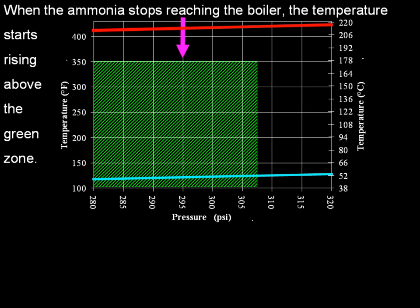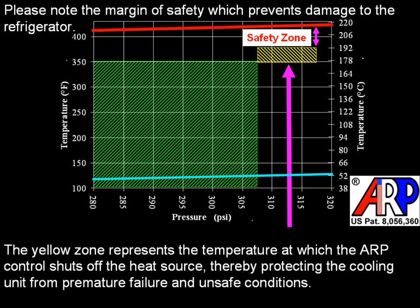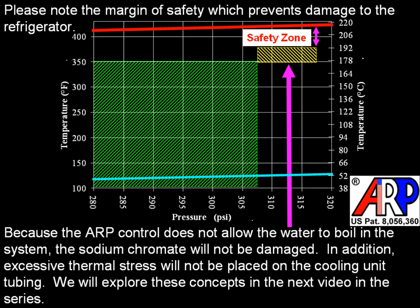When the ammonia stops reaching the boiler, the temperature starts rising above the green zone. The yellow zone represents the temperature at which the ARP control shuts off the heat source, thereby protecting the cooling unit from premature failure and unsafe conditions. Please note the margin of safety which prevents damage to the refrigerator. Because the ARP control does not allow the water to boil in the system, sodium chromate will not be damaged. In addition, excessive thermal stress will not be placed on the cooling unit tubing.